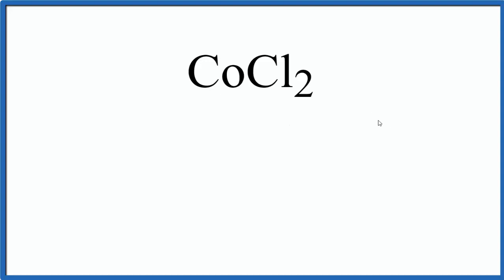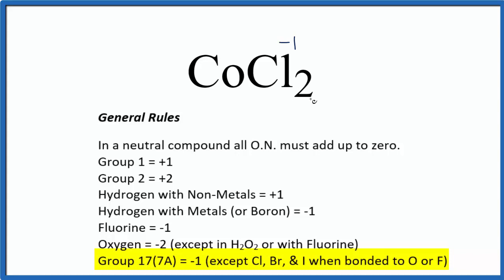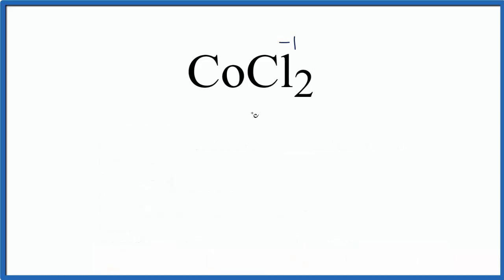To do this, we have chlorine, which we know is normally a minus 1, and we have two of them. So 2 times minus 1 is minus 2. And since all of the oxidation numbers have to add up to 0, the only way we can cancel out the minus 2 is with a plus 2. So the oxidation numbers add up to 0, making the oxidation number for cobalt plus 2.